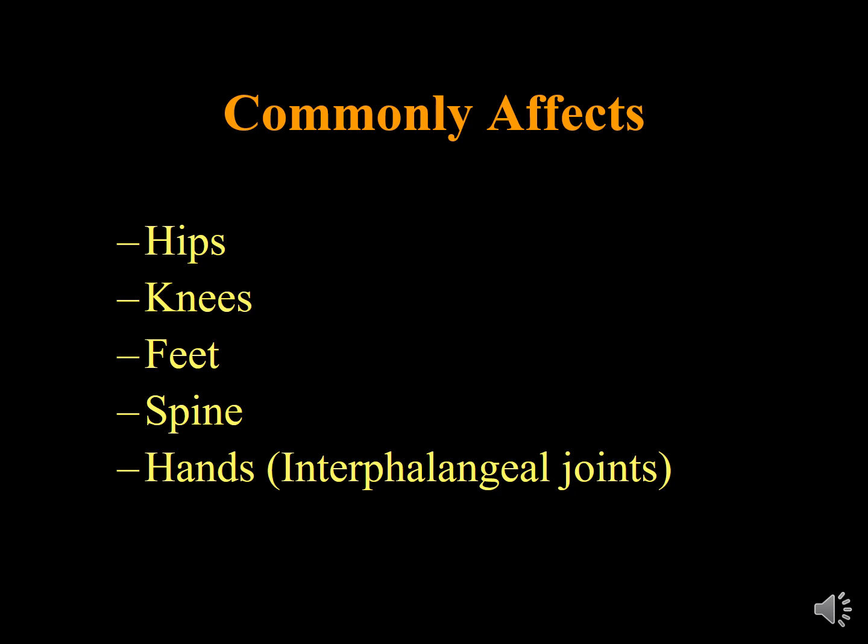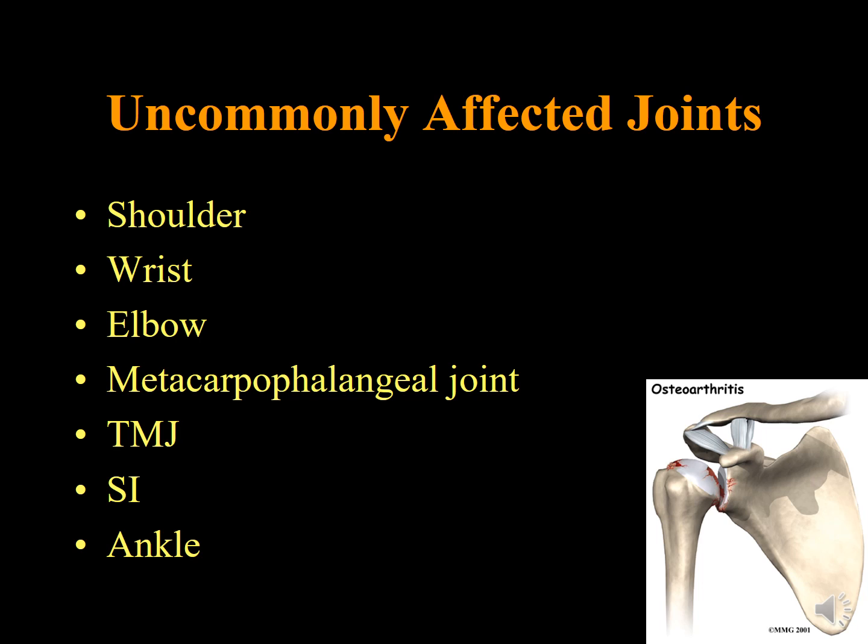Knee Osteoarthritis is a very common disease. The sacroiliac joint is mainly affected in ankylosing spondylitis. The ankle joint is a weight-bearing joint but Osteoarthritis does not typically affect the ankle joint. The anatomical distribution of joints affected by Osteoarthritis includes the cervical spine, lumbar spine, and hand joints — especially the proximal and distal interphalangeal joints.